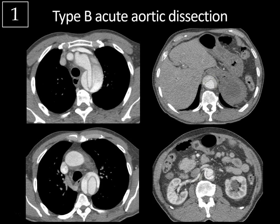Aortic dissections occur when there's a tear in the intimal layer of the aortic wall and blood enters the medial layer, forming a second blood-filled channel within the wall known as the false lumen. Most aortic dissections are seen in elderly hypertensive patients, but less commonly other causes like a penetrating atherosclerotic ulcer or underlying connective tissue disorder like Marfan syndrome might be present.